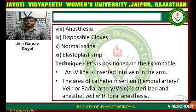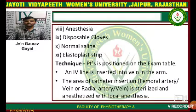Next is anesthesia, next is disposable gloves, next is normal saline or elastoplast strip. For the technique: the patient is positioned on the examination table and an IV line is inserted into a vein in the arm. The area of catheter insertion — femoral artery, femoral vein, radial artery, or radial vein — is sterilized and anesthetized with local anesthesia.